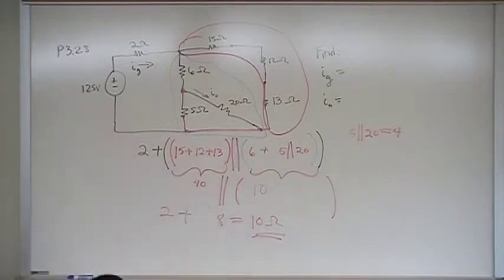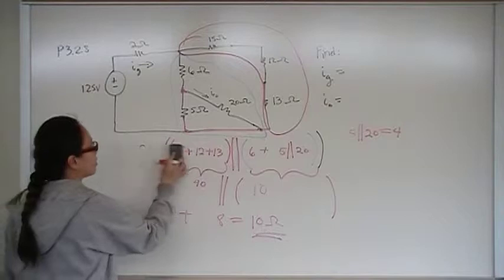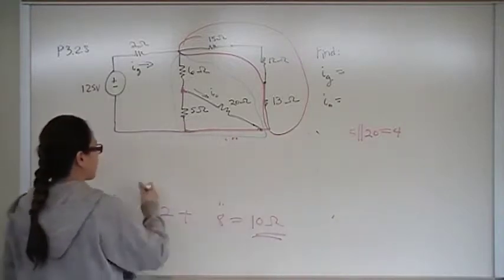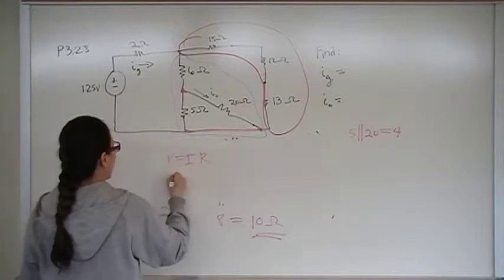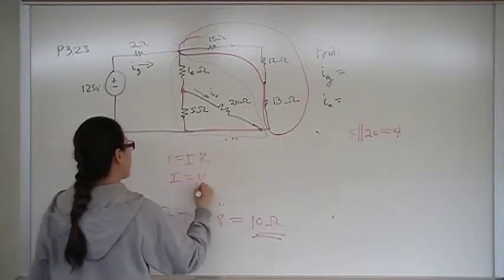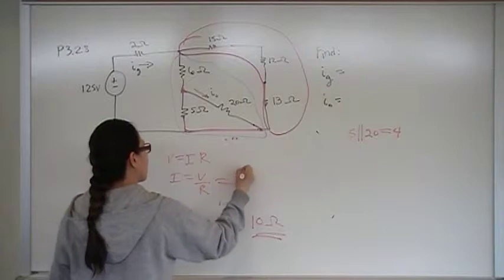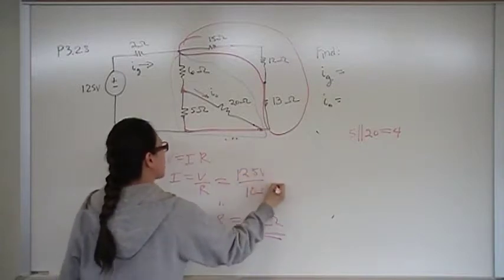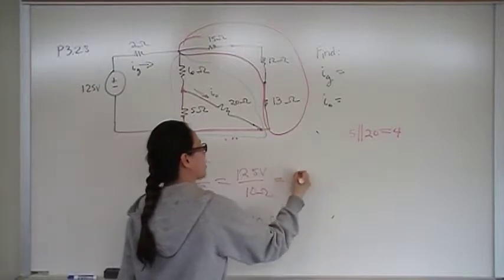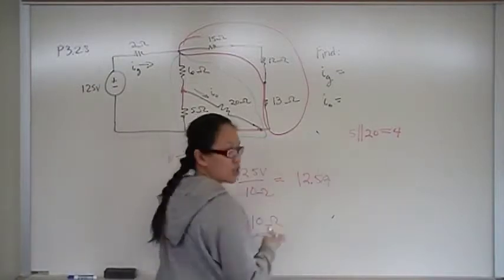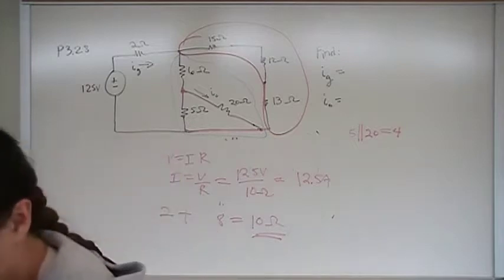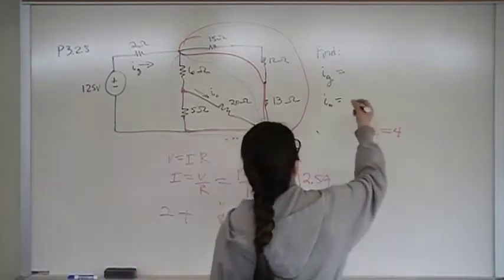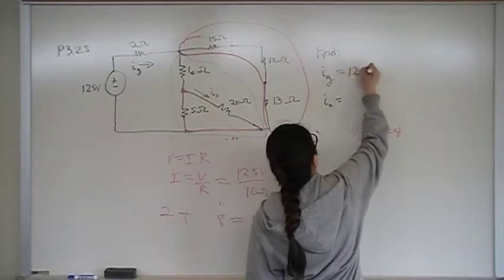Why did we need that? We need that to find IG, which is the total current. So we're going to use V equals IR, which is Ohm's law. So I equals V over R. That's 125 volts over 10 ohms. Volts over ohms is amps, so that gives me 12.5 amps, which is part A.